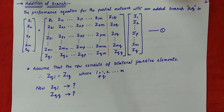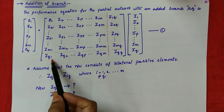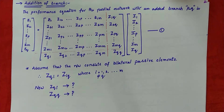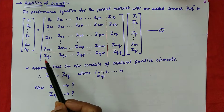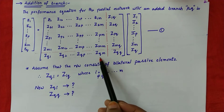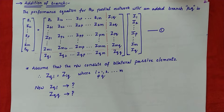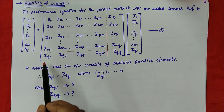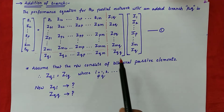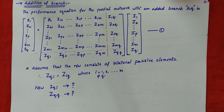Now we assume the network consists of bilateral passive elements, meaning Z_Qi equals Z_iQ for any i. This is the performance equation for a partial network with added element PQ. What we need to do is derive the relation for off-diagonal elements and for diagonal elements — and there we can find the algorithm for formation of Z bus. So firstly we find the relation for off-diagonal elements and then the diagonal element.